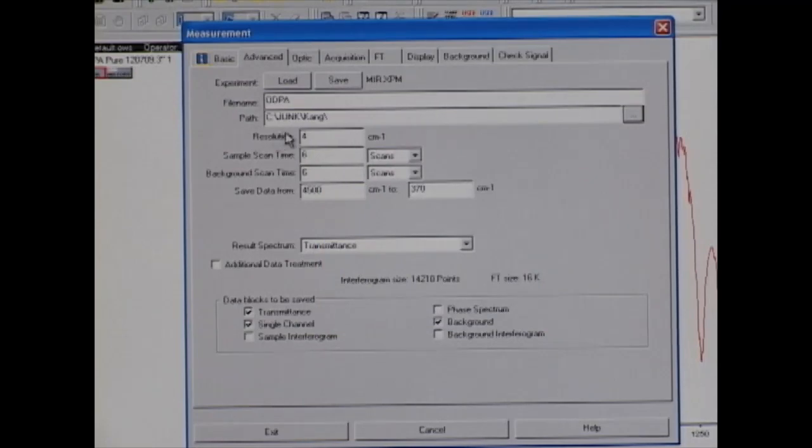Then we move on to the resolution box, which we want to have at 4 cm inverse. The sample scan time is normally run at 16 scans, and the background scan time should be the same or higher than the sample scan time.